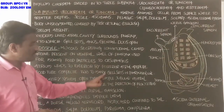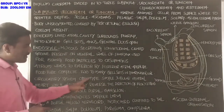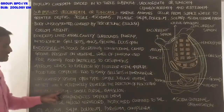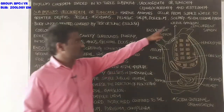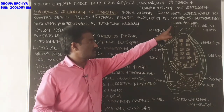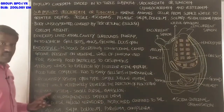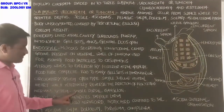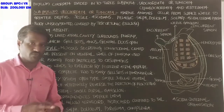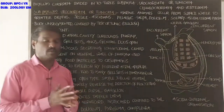A simple tubular ventral heart is present, which alternately reverses the direction of blood flow. The nervous system consists of a single dorsal ganglion. These animals are bisexual hermaphrodites.